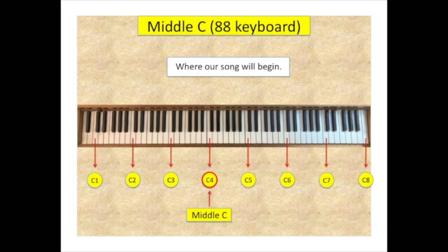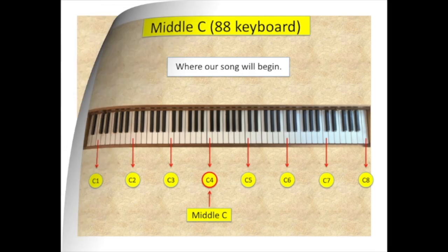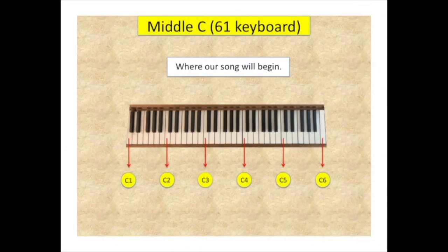Using the magic of CGI, let's cut this keyboard down to a 61 key keyboard. In this case, and in the case of 49 and 76 key keyboards, middle C begins at the third position.